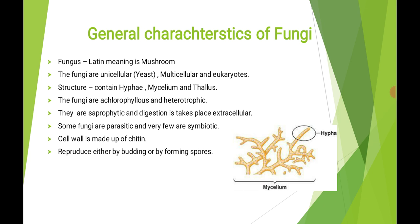Reproduction in fungi occurs either by budding or by forming spores. Budding is an asexual reproduction in which a new organism develops from an outgrowth due to cell division at one particular site. These buds develop into tiny individuals, and when fully mature, they detach from the parent cell and become new independent individuals.